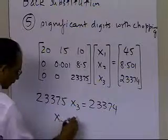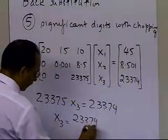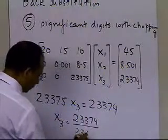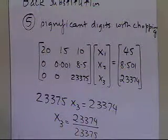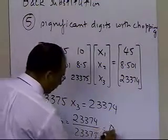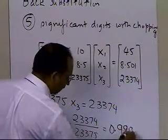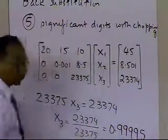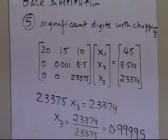So x3 turns out to be 23374 divided by 23375. So that's the numerator divided by the denominator, and that value up to 5 significant digits with chopping is 0.99995. That's what I get. So that's what we get for x3.